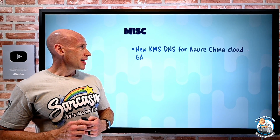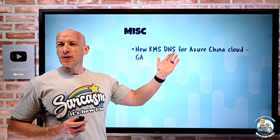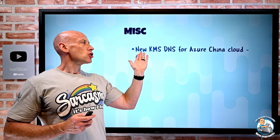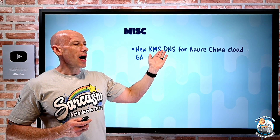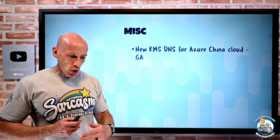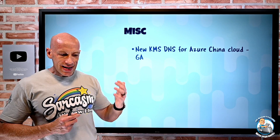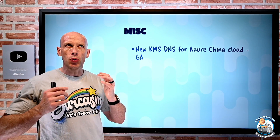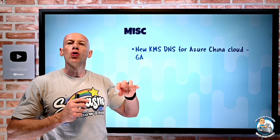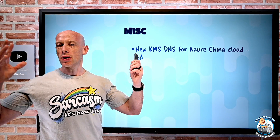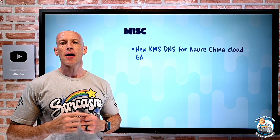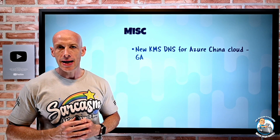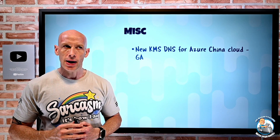In the miscellaneous category, there's a new KMS DNS name for Azure China Cloud — moving to azkms.core.chinacloudapi.cn, which points to two new IP addresses. It's a general change to how activation occurs in Azure, and it has now come to the China Cloud as well.